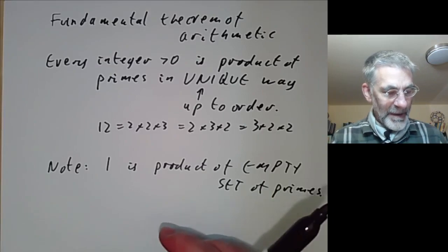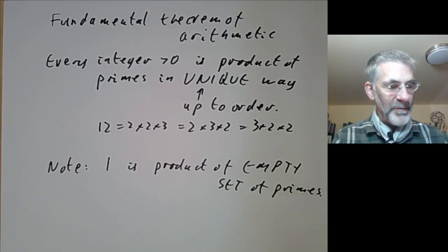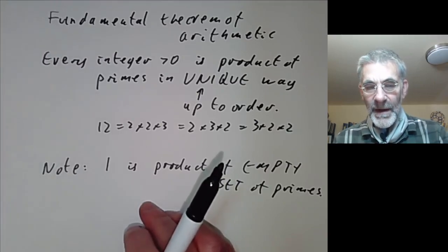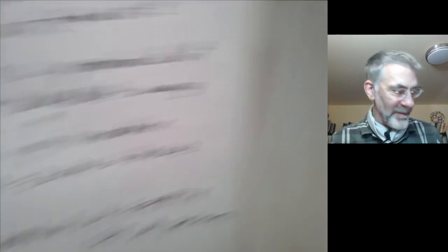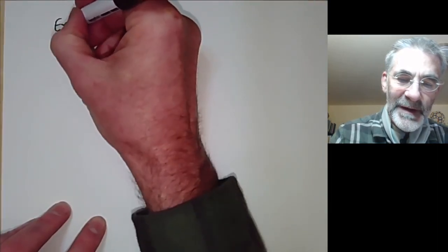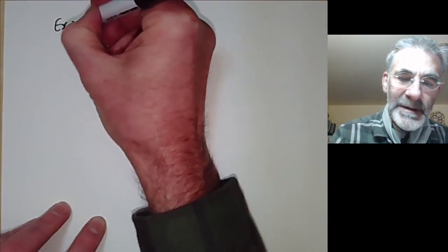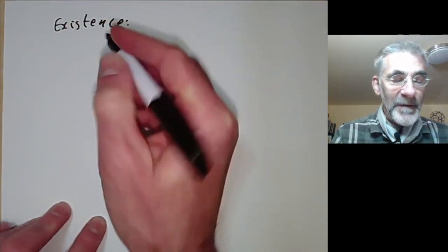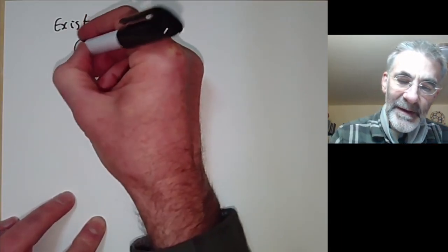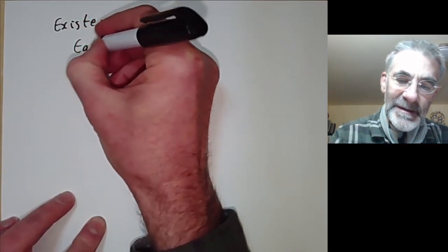This was sort of proved by Euclid, except that he had a slight problem actually stating this theorem — I'll comment more about that afterwards. But let's first prove the fundamental theorem of arithmetic. First we have to prove existence of a decomposition into primes, and the existence is easy.